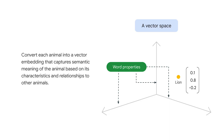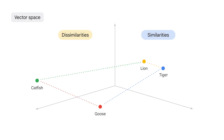Another option is to convert each animal into a vector embedding that captures the semantic meaning of the animal based on its characteristics and relationships to other animals. Now, you can search for similar animals by calculating the distance between one animal vector and all other animal vectors in your database. However, you need a database that will support this.